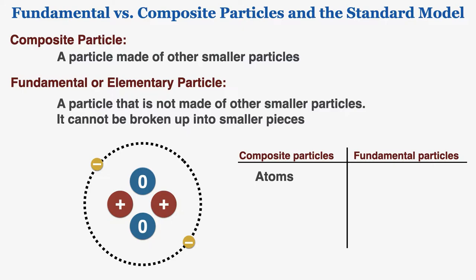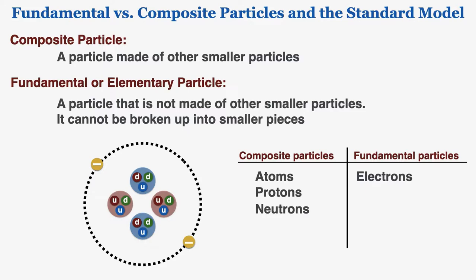We've learned that electrons are actually fundamental particles — it's not possible to break an electron down into smaller pieces. Protons and neutrons, however, are actually composite particles, made up of smaller particles called quarks. Quarks are fundamental particles; it's not possible to break them down any further into smaller particles.